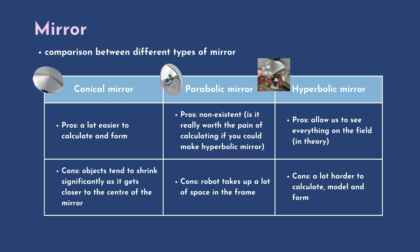There are multiple types of omnidirectional mirrors we could have formed, while we eventually chose the hyperbolic mirror. Here's a comparison of the different types of mirrors and why we eventually chose the hyperbolic shape. A conical mirror, while arguably much easier to form, causes objects to shrink significantly as it gets closer to the centre of the mirror, which would create a major blind spot for the robot. For a parabolic mirror, the robot takes up a lot of space in the frame, which is not ideal as we would like to have a greater view of the field. Thus, we chose the hyperbolic mirror as it allows us to see everything on the field, which would be ideal in trying to find the ball.